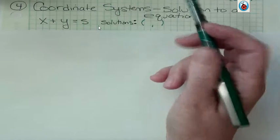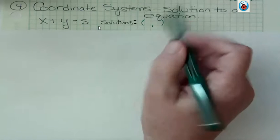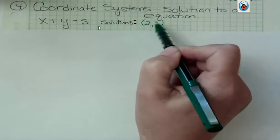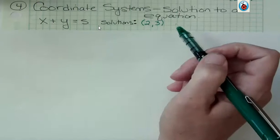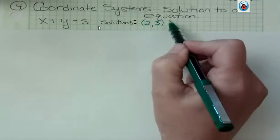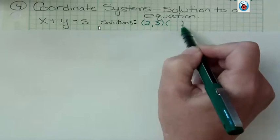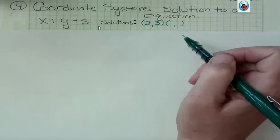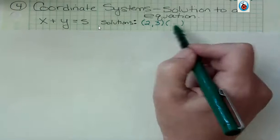Think of anything, and the ones that people usually yell out right away are like 2 and 3. That's true, that would be a solution. What's another solution? Because the thing about these is that there's an infinite number. But what's another obvious one? Maybe 1 and 4.